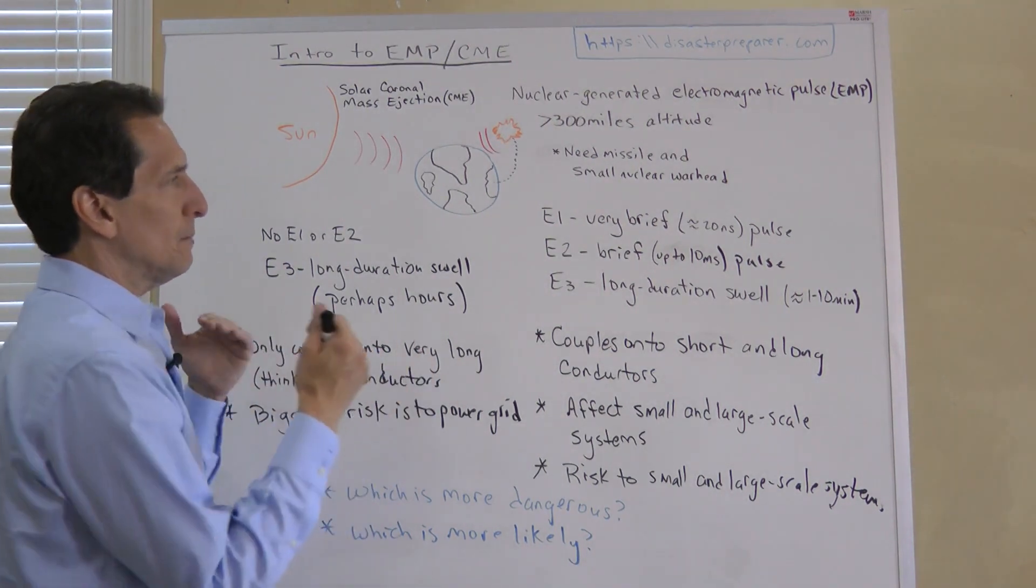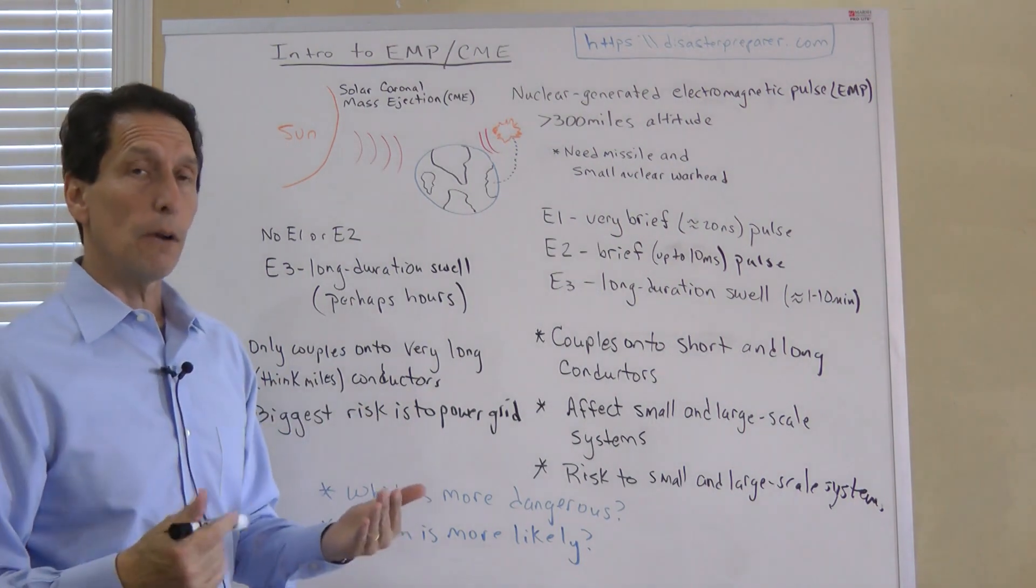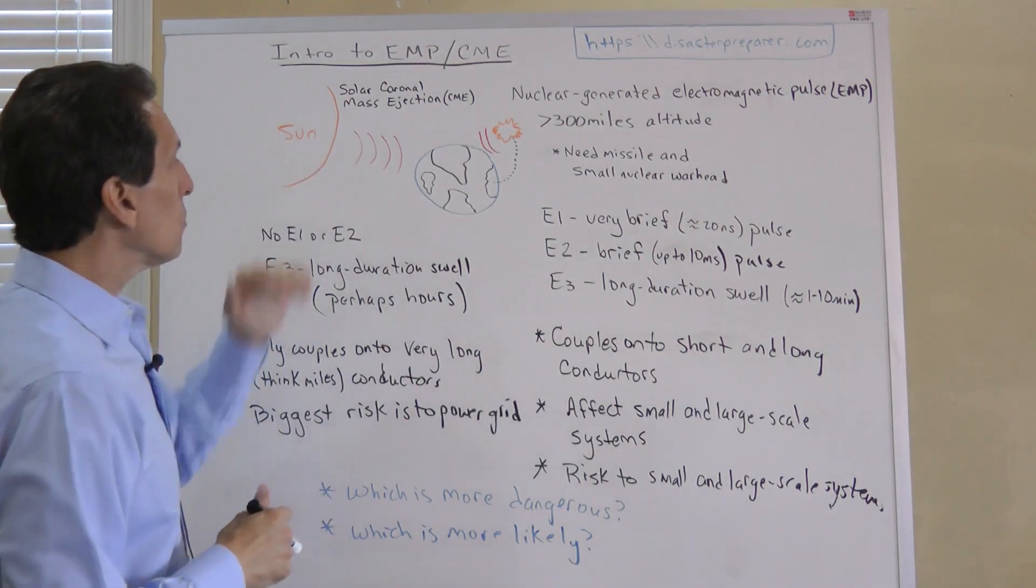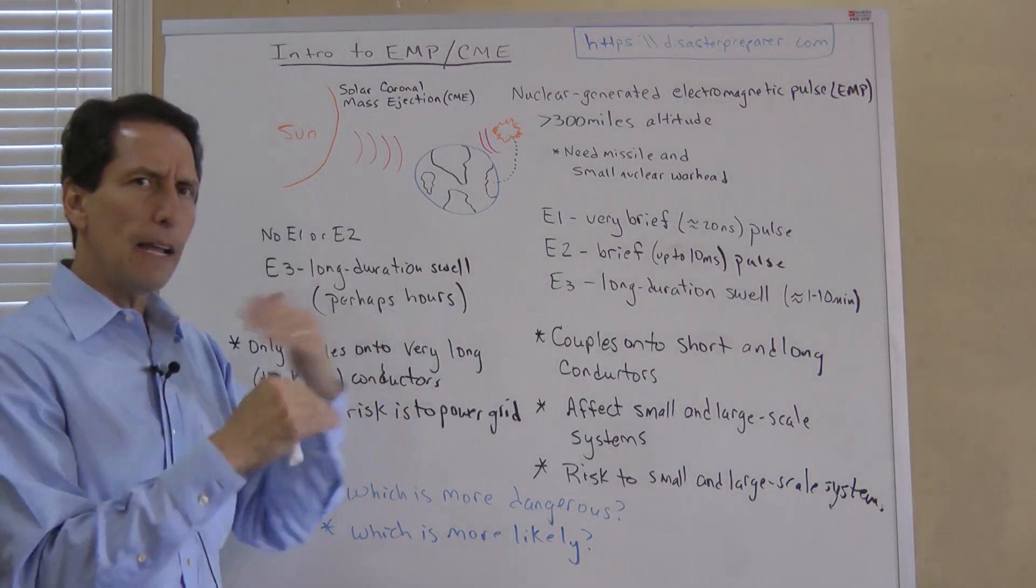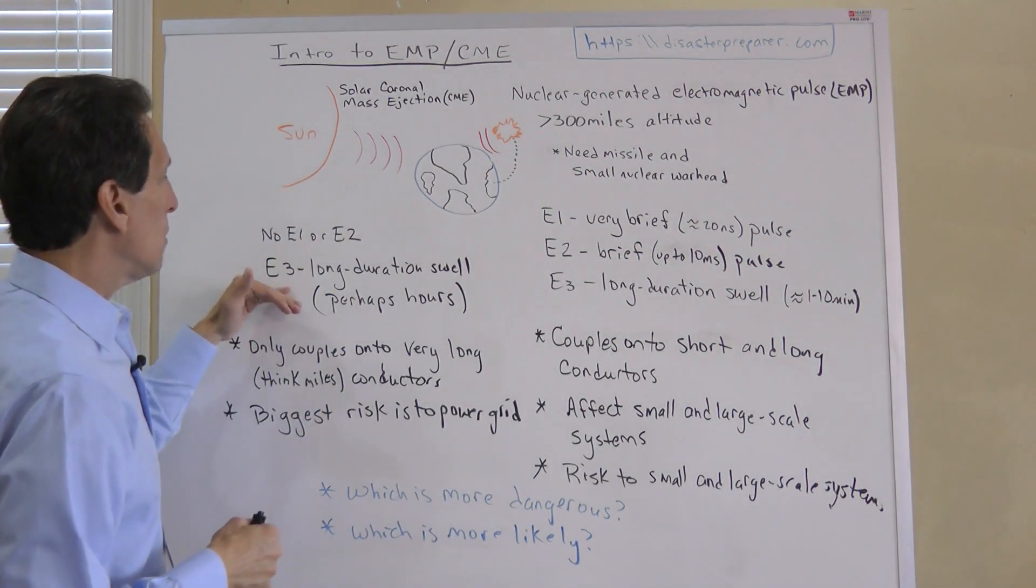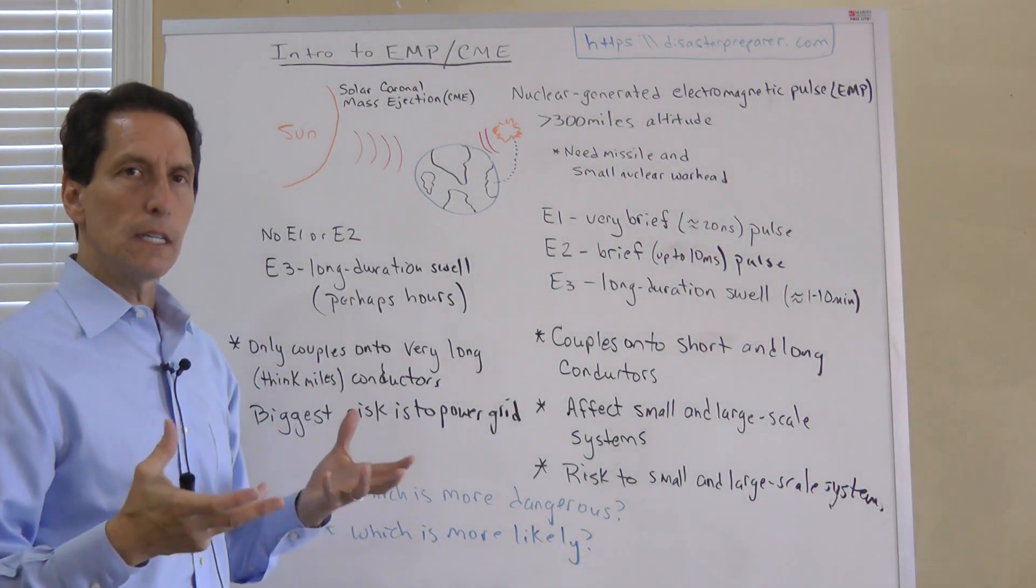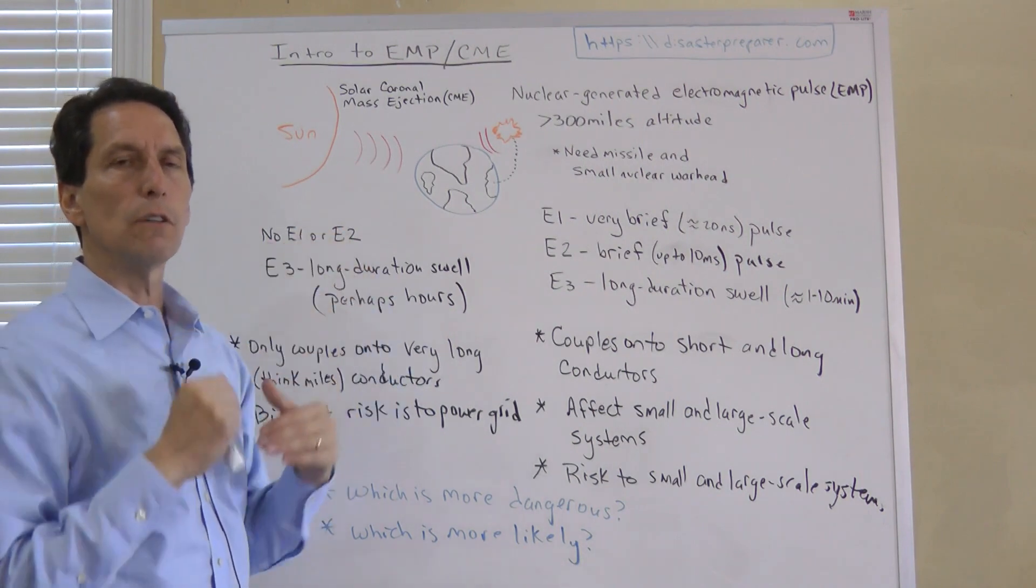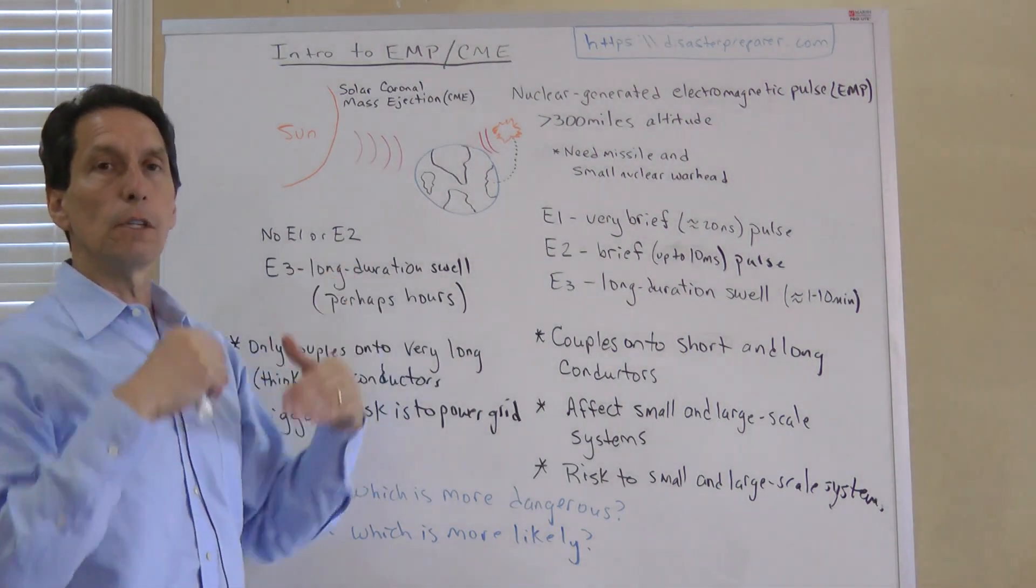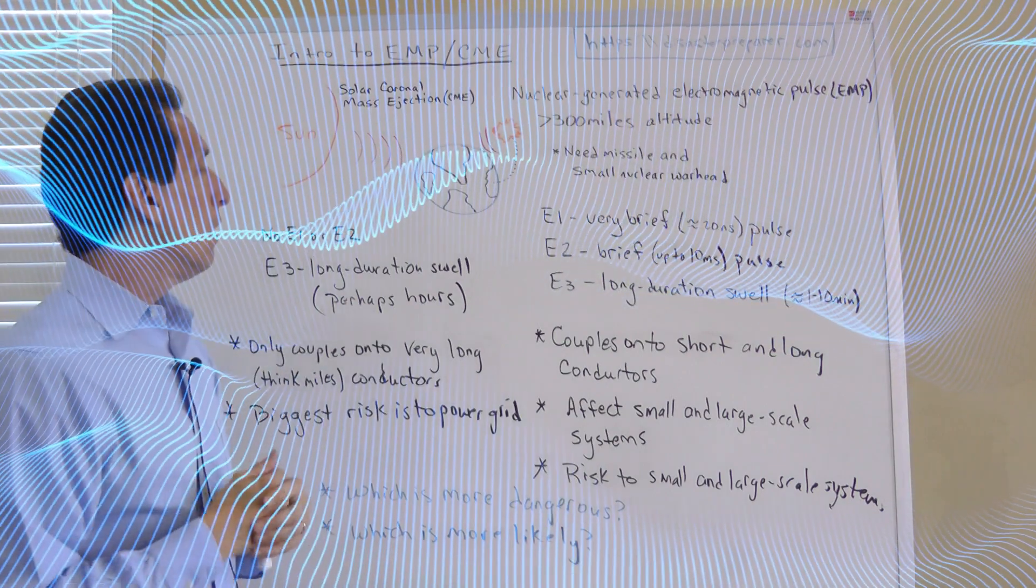Let's talk about the specific waveforms generated from these two things because it's really important to understand that they're different. A lot of times people think they're one and the same, but they're different. A solar CME doesn't have high frequency energy that perturbates the earth. It only has an E3, a long duration swelling effect on the energy in conductors. Think of that like a wave coming in and rising the voltage levels on those long conductors. It might take hours for that energy to fully rise. This is not quick, over in a millisecond—it's a slow energy build on very long conductors.